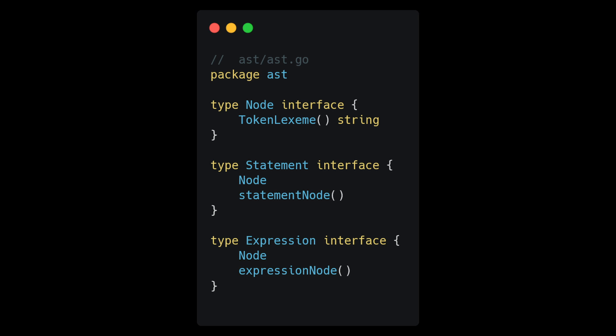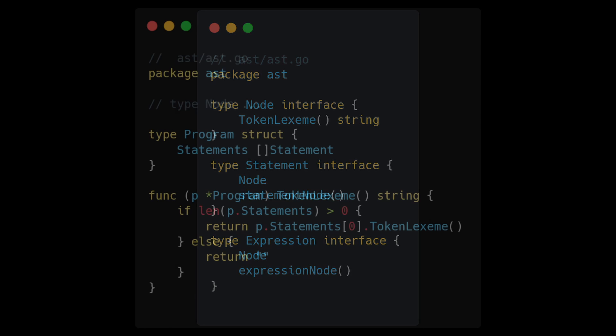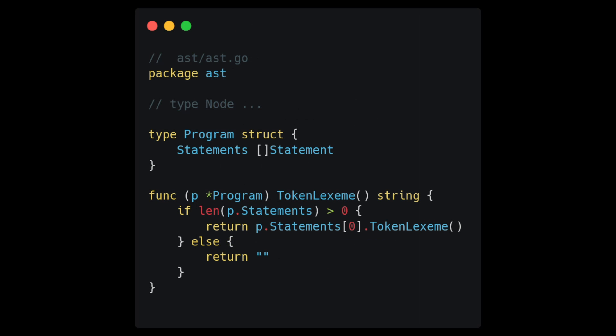With these interfaces complete, let's create our first real implementation of the Node interface called Program. This Program node is going to be the root of our abstract syntax tree. Each program is just going to be a series of statements, which we store in the statements array. For the implementation of the token lexeme method, we are just going to return the lexeme of the first statement node. If there are no statements, we return an empty string.